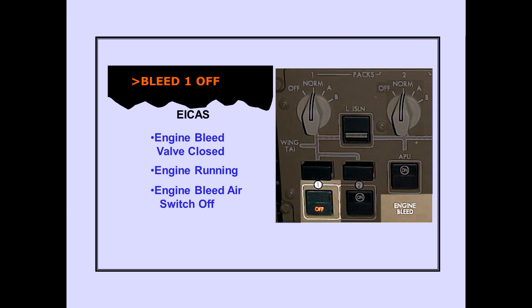The ICAS advisory message 'bleed off' is displayed when an engine bleed valve is closed, the respective engine is running, and the respective engine bleed air switch is off. The off light also illuminates.